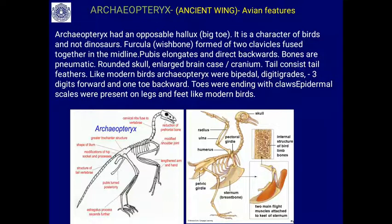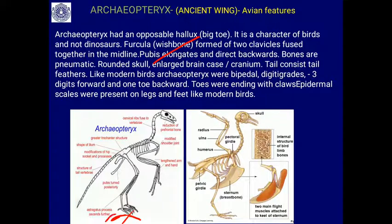Archaeopteryx is a connecting link between birds and reptiles, showing both reptilian and avian characters. The outer morphology shows more avian characters while the inner skeleton is more reptilian. Avian characters include: an opposable hallux (big toe) characteristic of birds, with three toes forward and one backward; the furcula (wishbone) similar to modern birds; the pubis elongated and directed backwards; pneumatic bones; and a rounded skull.